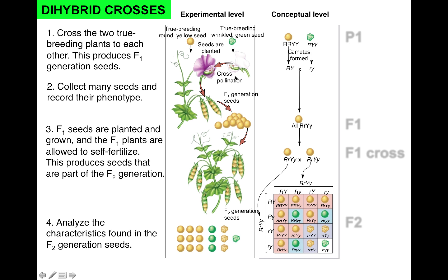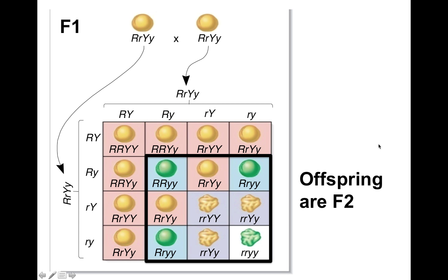So a dihybrid cross was set up. In the P1 generation, we have round versus wrinkled mated together. The F1 generation produced peas that are all round and yellow. The F1 self-cross produces gametes that are present in the F2 generation. If this pea plant can produce all four types of gametes, and the other pea plant can also produce all four types of gametes, you end up with a whole bunch of different possible combinations.